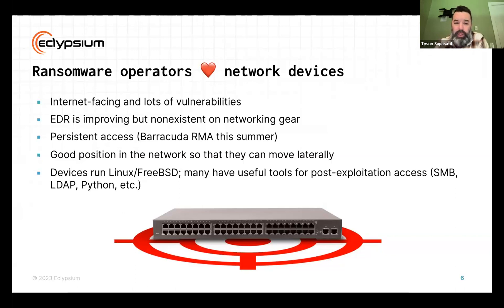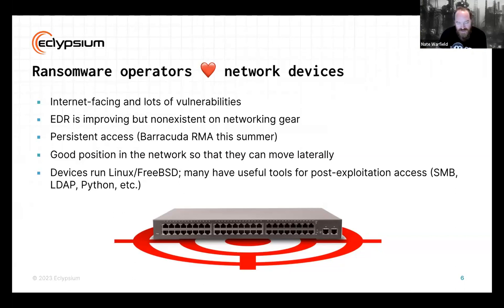One of the things worth touching on is management interfaces being exposed to the internet. As people started wrapping their brains around taking these off the internet — even yesterday I looked for F5 management interfaces on the internet. Back in 2020, I think there were 13 or 14 thousand of them online. Today, most of the ones you find on Shodan are actually honeypots that emulate a BIG-IP. Doing some Shodan hackery, I was only able to find maybe 700 actual F5 management interfaces exposed.